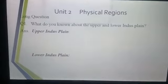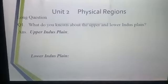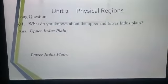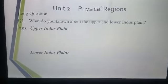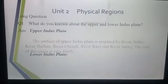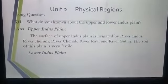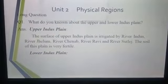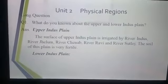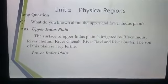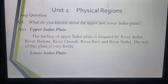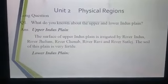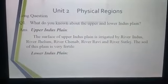The Indus plain is divided into two parts: the upper Indus plain and the lower Indus plain. The surface of the upper Indus plain is irrigated by the River Indus, River Jhelum, River Chenab, River Ravi, and River Sutlej. The soil of this plain is very fertile.